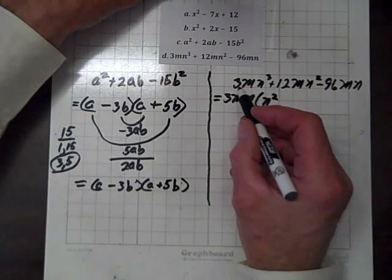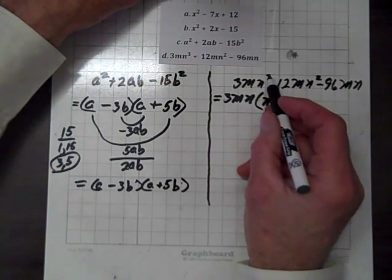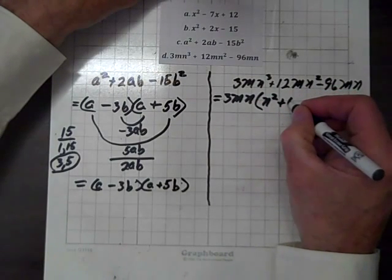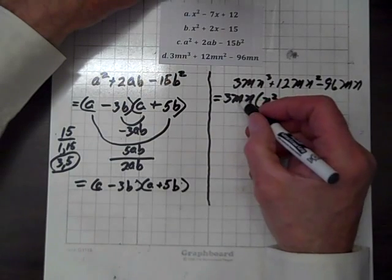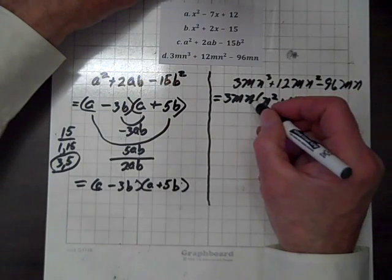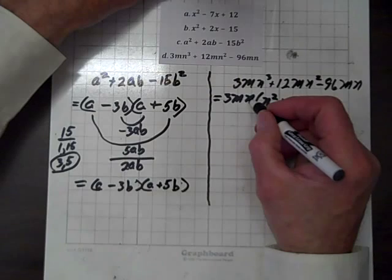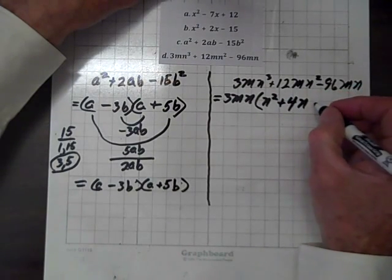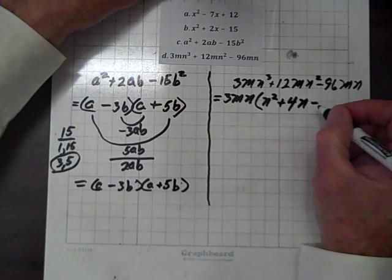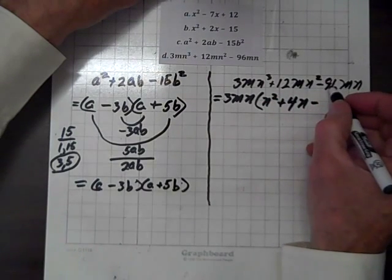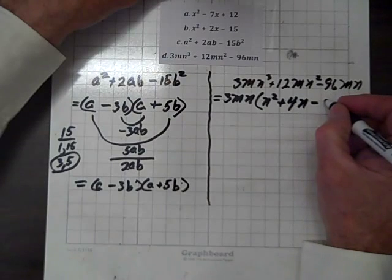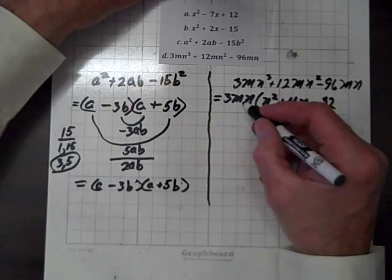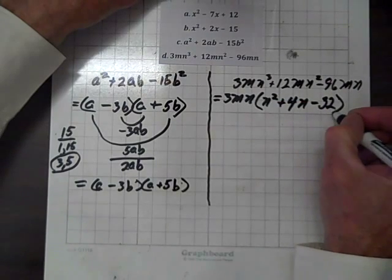Plus, 3 goes into 12 how many times? And that's 4. The m is accounted for, but we have one more factor of n here. So, since that isn't accounted for, we will install it. Now, 3 goes into 96 how many times? And that turns out to be 32. And notice, the m and the n are clearly accounted for.